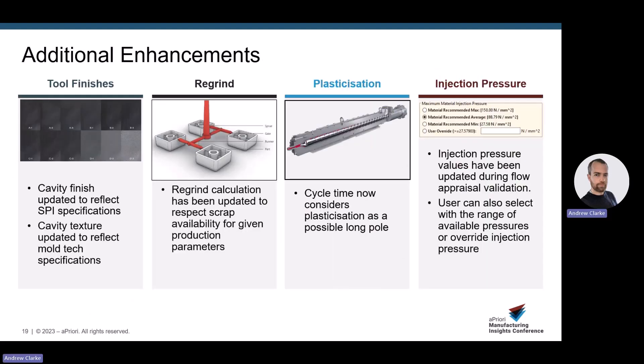In addition to the major enhancements we've made to cooling time via wall thickness recognition and clamp force calculation via flow analysis, we've also been making other enhancements too. These include enhancements to our tool finishes. We have updated our tool finishes to align with SPI specifications, as well as using mold tech standards for our textures. We've made enhancements to how we calculate and consider reground. We now dynamically adjust the process reground with respect to what is available given the specific production parameters up to the limit in which you set for your reground percentage.